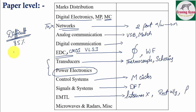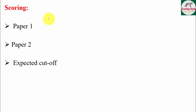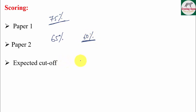The paper level was really good quality according to the presenter, satisfying for a competitive exam. However, when surveyed, more than 85% of students said the paper was difficult. For scoring: Paper 1 is easy and you can score at least 75%. Paper 2 is trickier — scoring 65% puts you in the safe zone. The expected cutoff for general/open category is 56 to 58%, and for JRF it is around 63.5 to 64%.